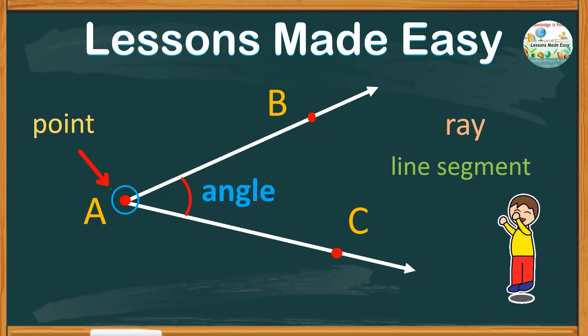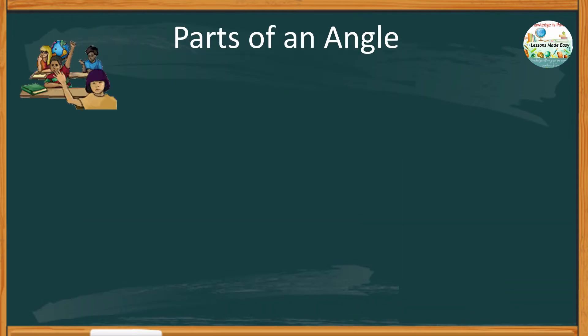But how do you name this angle? What are the parts of this angle? What we know for sure, that an angle is formed when two rays meet. Let's try again, and this time, we will name the parts of the angle as well.